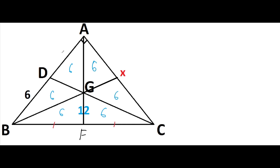Here we can say that this side will be six. And we know that the area of triangle ABC will be equal to six times six, which is 36.